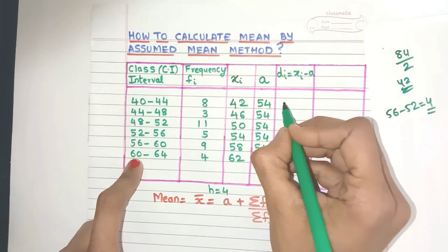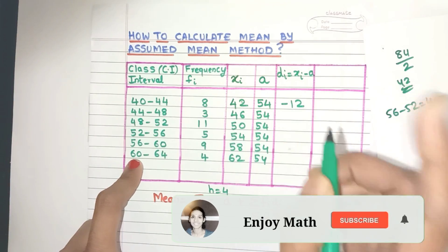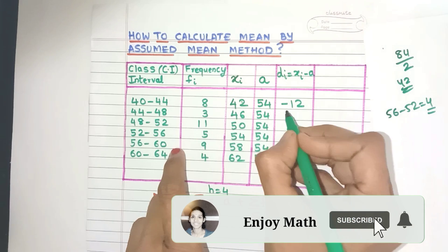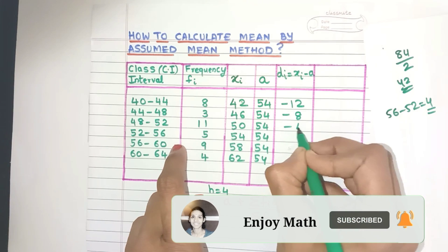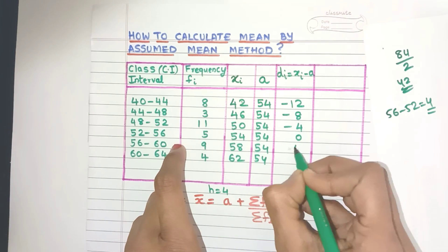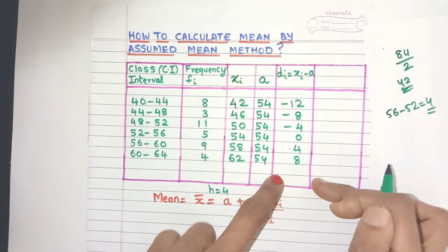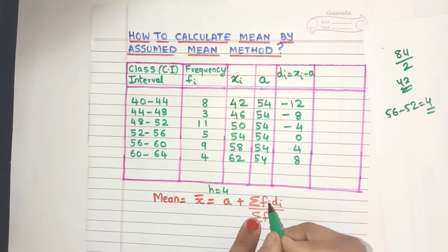42 minus 54, that will be minus 12. Remember to put the minus sign. 46 minus 54 minus 8. So this way, I can easily find out all the values. Just do it carefully. Now these are all the DI values.